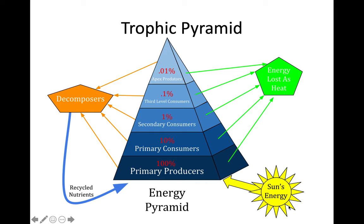In a community, energy is passed through various trophic levels as organisms consume each other. This is what we call a trophic pyramid. At the bottom, primary producers trap 100% of the energy captured from the sun. Organisms that feed directly on primary producers acquire 10% of that energy and are called primary consumers — for example, an herbivore that feeds on grass.